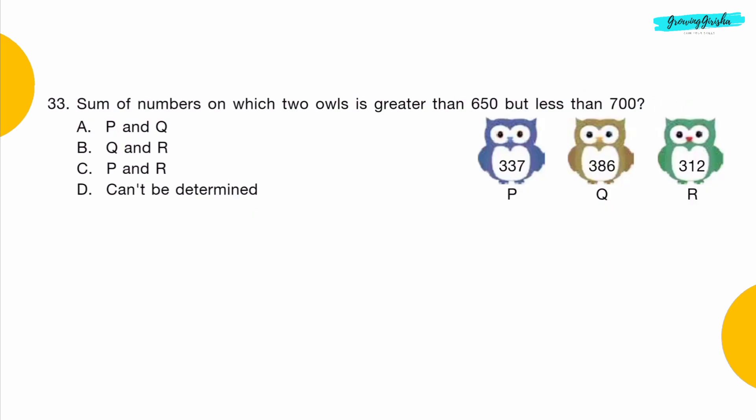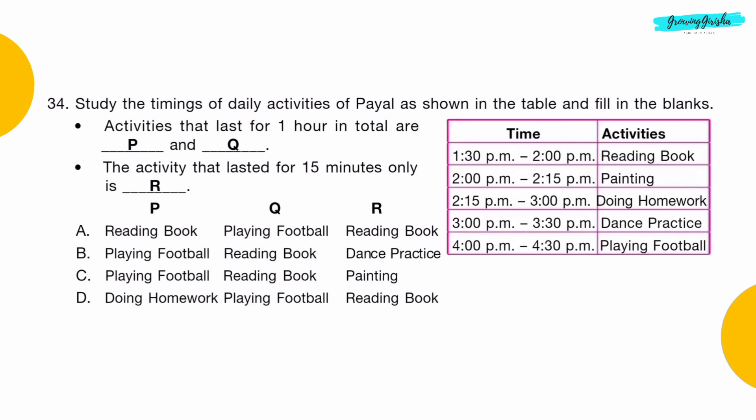Question 33: Sum of numbers on which 2 owls is greater than 650 but less than 700. Option B: Q and R.